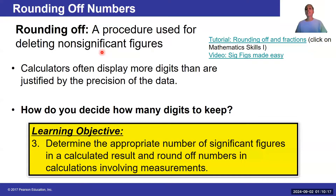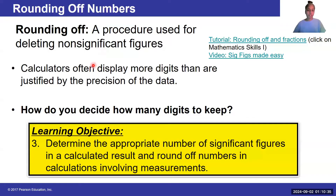What do we mean by that? Sometimes your instruments are only as precise as one decimal place, or two decimal places, or maybe no decimal place at all. Your calculations cannot be more precise than the tools that were used to take the measurements. Our learning objective is determining the appropriate number of significant figures in a calculated result and rounding off numbers in calculations involving measurements.